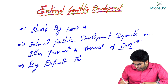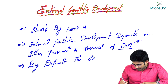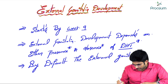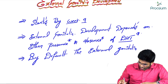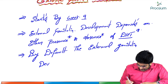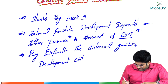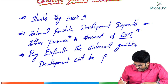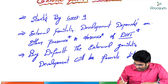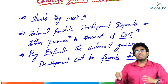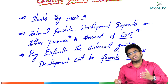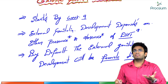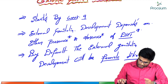By default, the external genitalia development will be female-like. If there is no dihydrotestosterone, the external genitalia will become female — that is, it will become vulva.